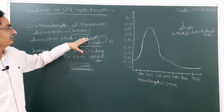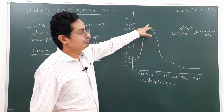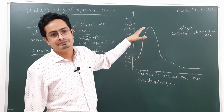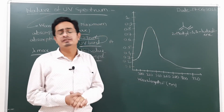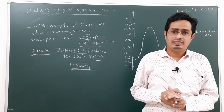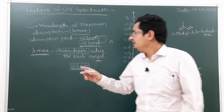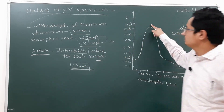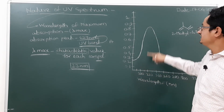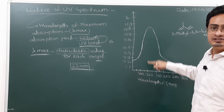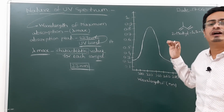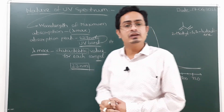At 223 nanometers there is a UV band — an absorption peak — and the lambda max value for this compound is 223 nanometers. The lambda max is the wavelength at which the compound shows the highest or maximum absorbance.